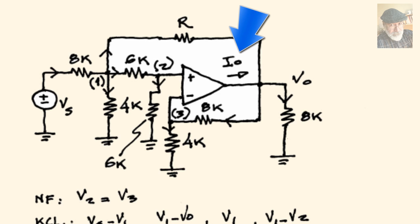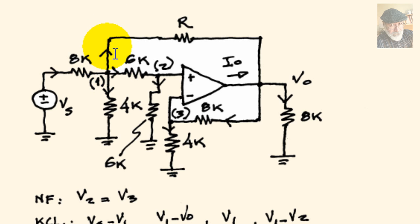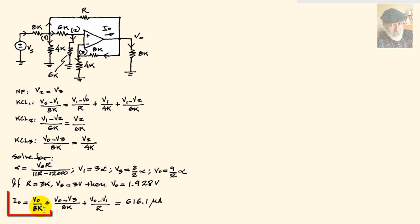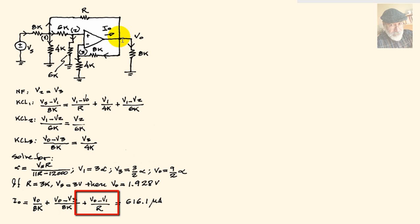Now let's compute the output current of the op-amp. That current is the sum of three currents: the current in the bottom branch, the current in the load resistor, and the current flowing from the output to node 1. I0 equals V0 over 8 kilohms, plus V0 minus V3 over 8 kilohms, plus V0 minus V1 over R. Adding these up gives 616.1 microamps.